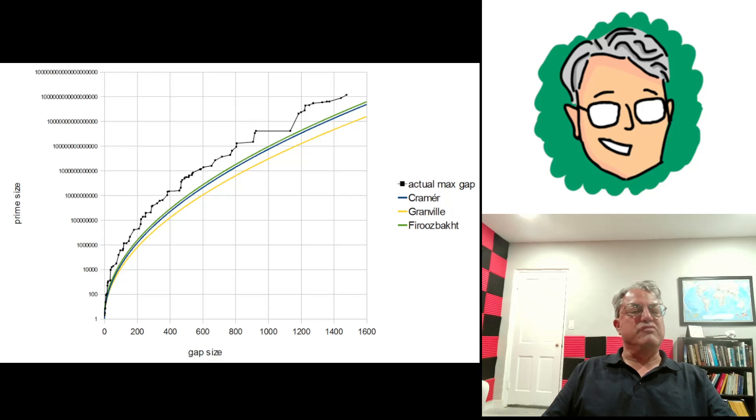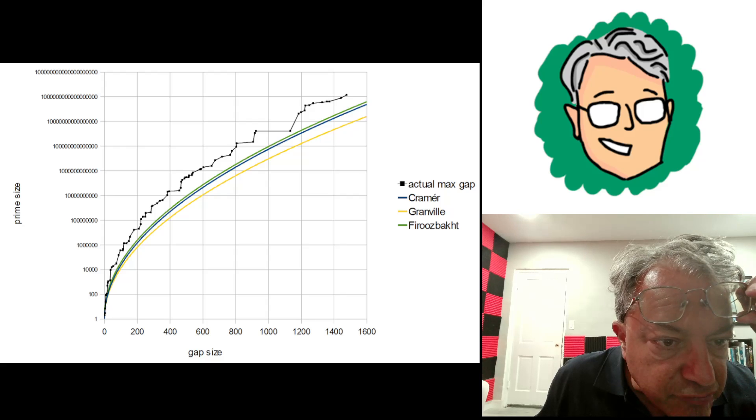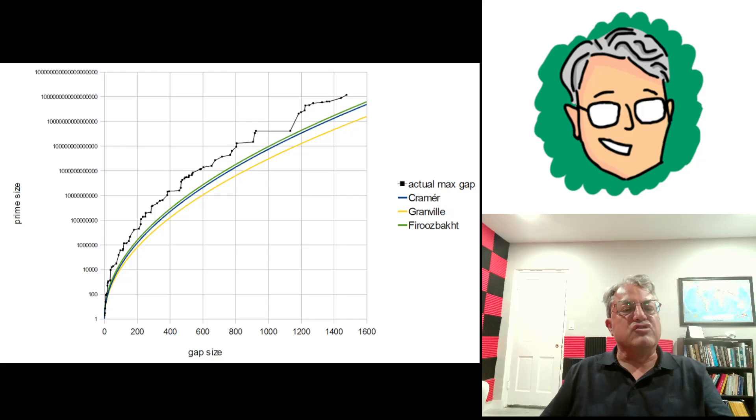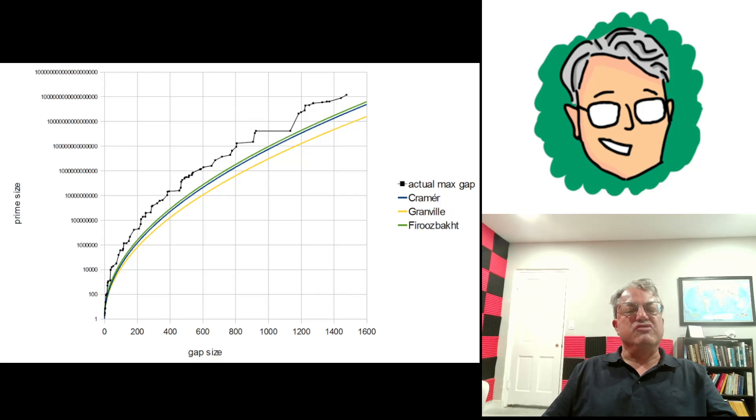These are the known values of the maximal size of the prime gap. And these other three curves here are just these three upper bounds I talked about. I guess Kramer's, it looks like Kramer and Firoozbakht's upper bounds are very close. Granville, I guess his isn't as good as the other ones. I'm a little surprised by this, but I guess the best upper bound we know, the tightest one we know is due to Kramer. Because I think Kramer's the one in black. So it looks like Kramer has the tightest upper bound. But these are just conjectures. They haven't been proven. But it looks like they all are true, at least up to the size of the maximal prime gaps that we know so far.